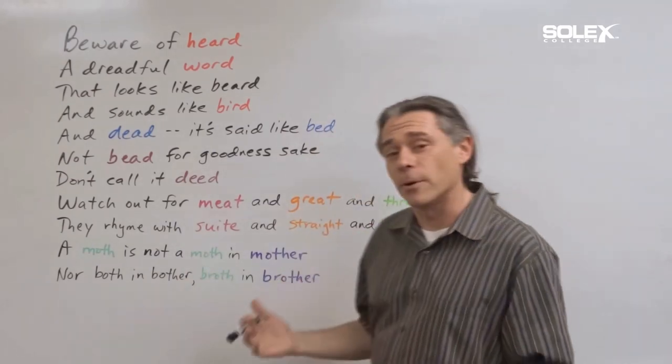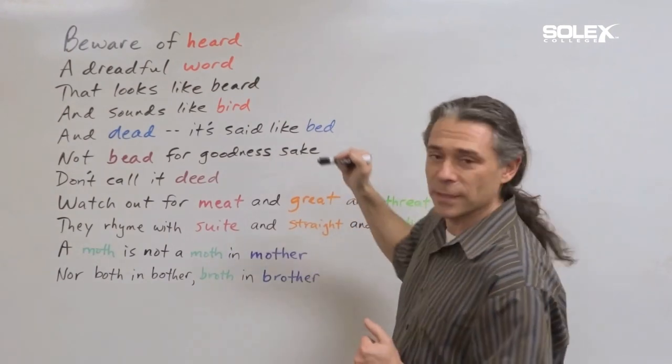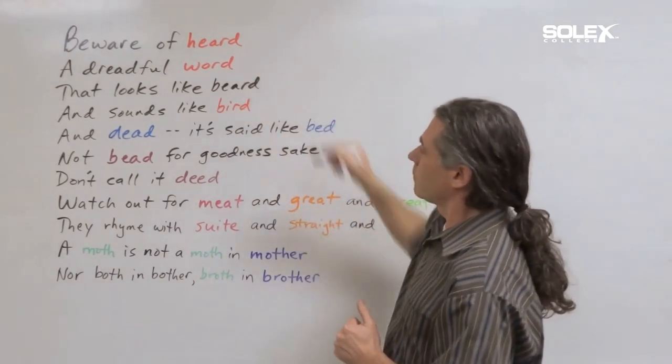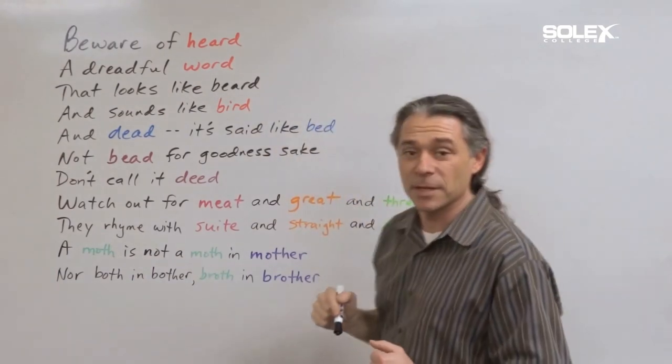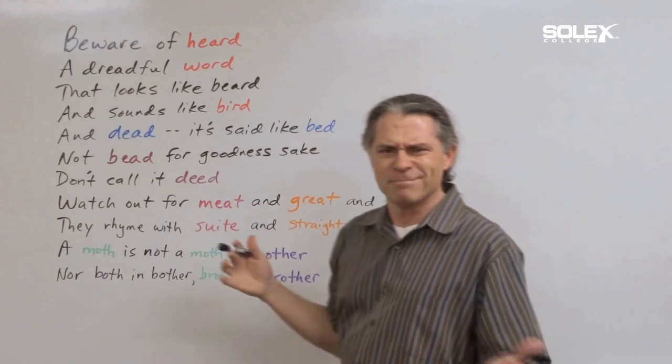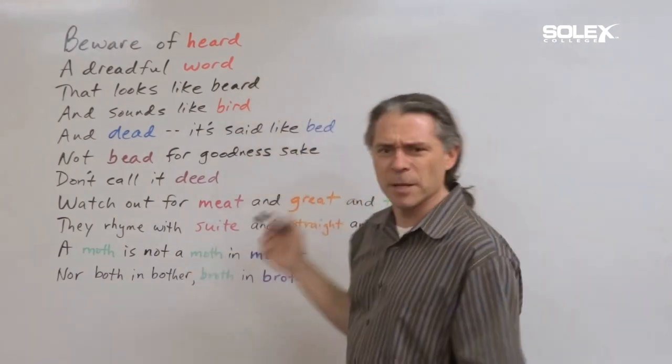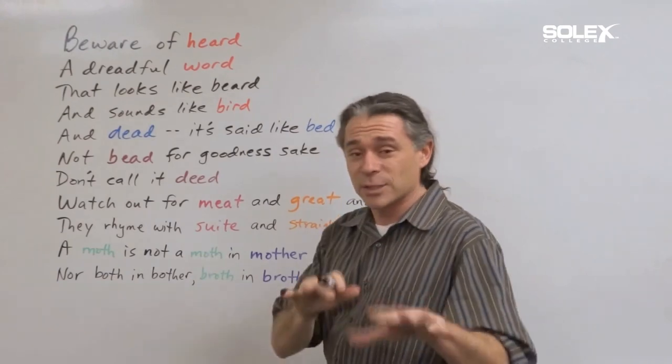So this is a famous poem that we're going to look at and when you first glance at it we can see that the words have different colors. You'll see that the words in the same color make the same sounds and you might ask, but how? They're all spelled differently, they all look different. Well that's what makes English kind of tricky.